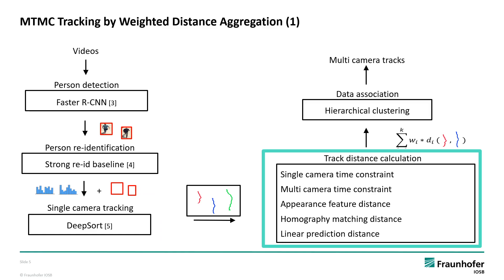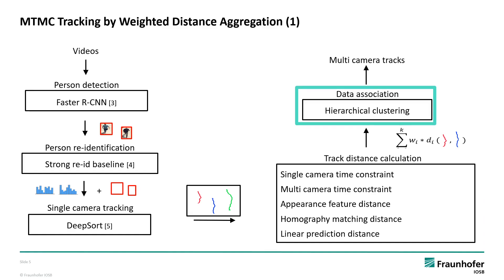After that, different pairwise distances of all single camera tracks are calculated. They are based on a linear prediction model, homographies between cameras, and constraints which use the fact that a person can only be visible in several cameras at the same time when they are in overlapping areas. These distances are subsequently weighted and aggregated. Then, a data association method, like hierarchical clustering, is used to obtain multi-camera tracks.